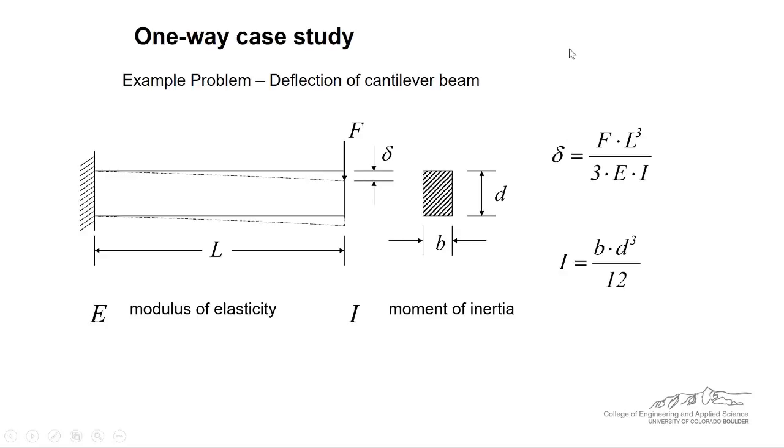It turns out that the deflection can be given by this equation here. Deflection equals force times length cubed divided by 3 divided by E which is known as the modulus of elasticity. That's a property of the material. Divided by I which is the moment of inertia. I can be calculated using B which is the thickness times D cubed over 12.